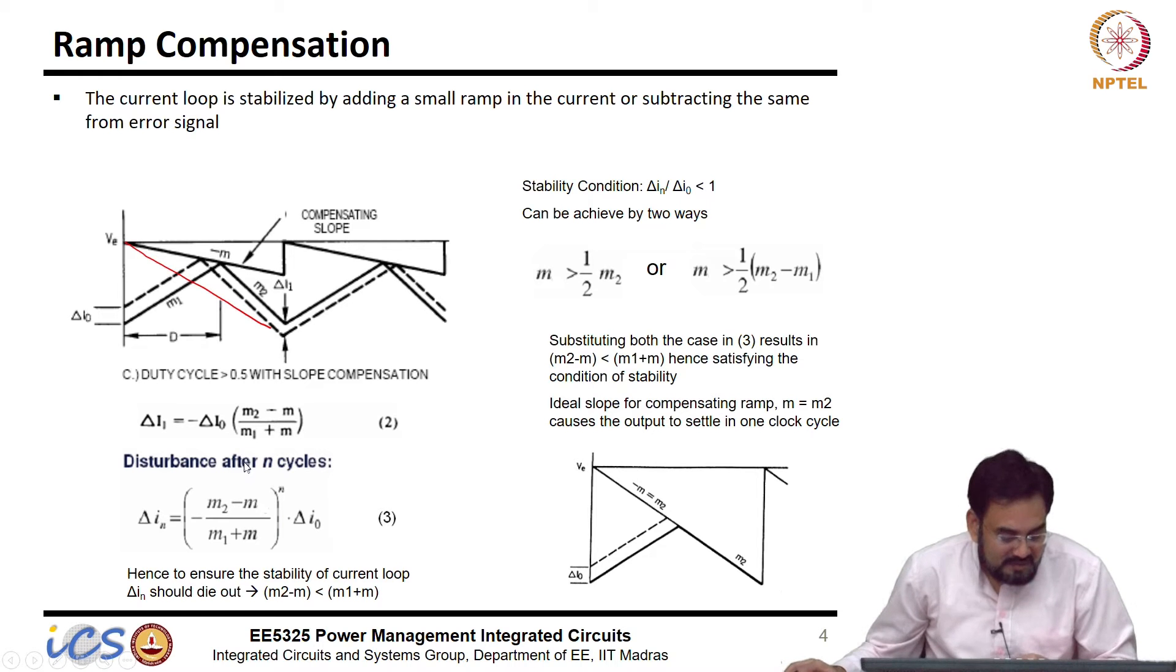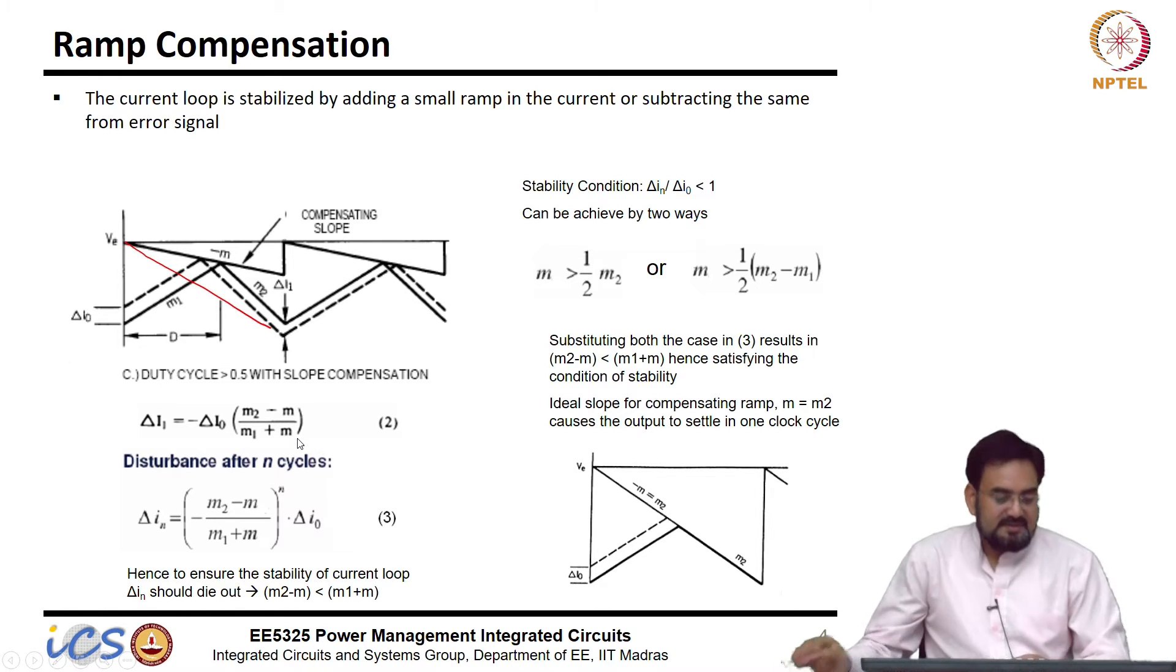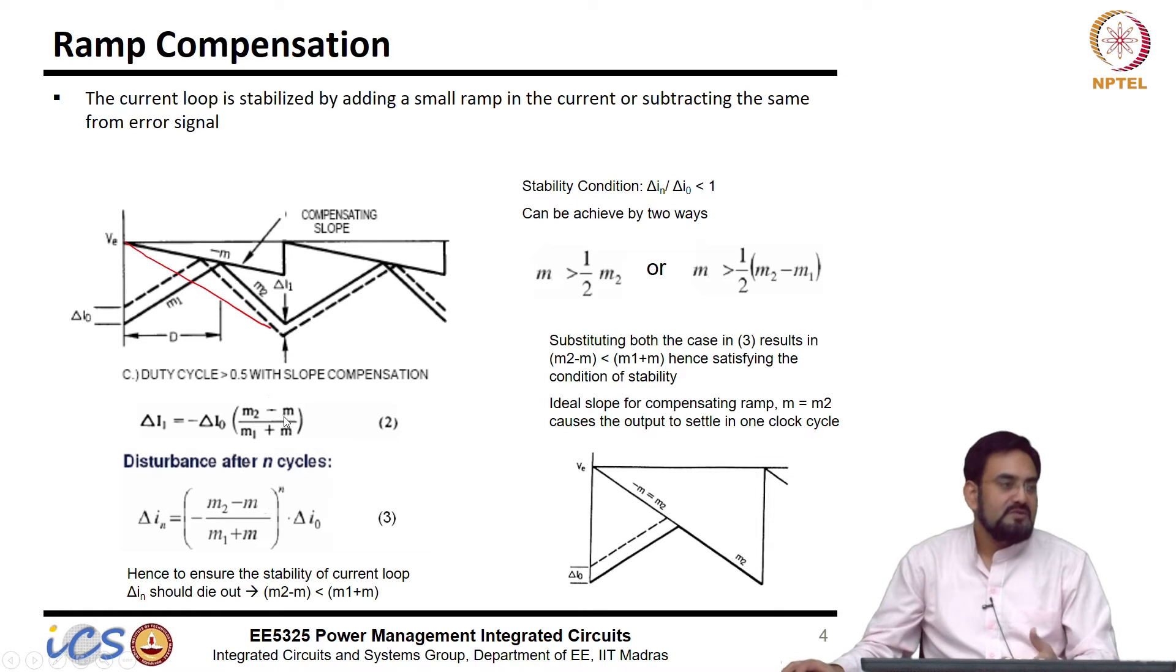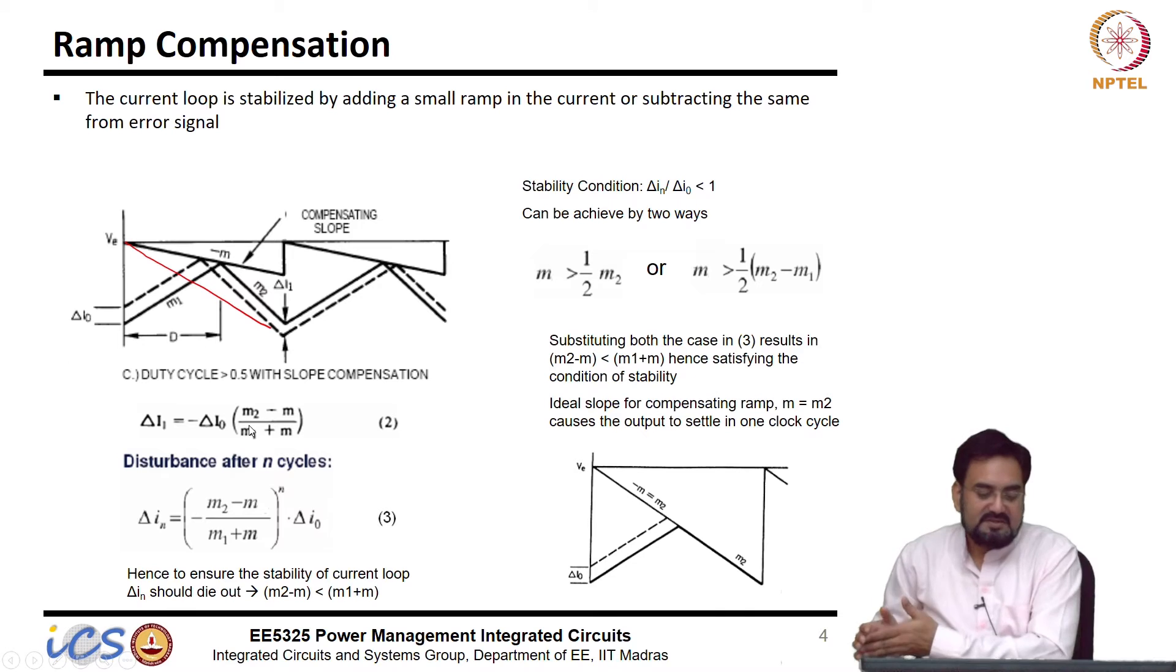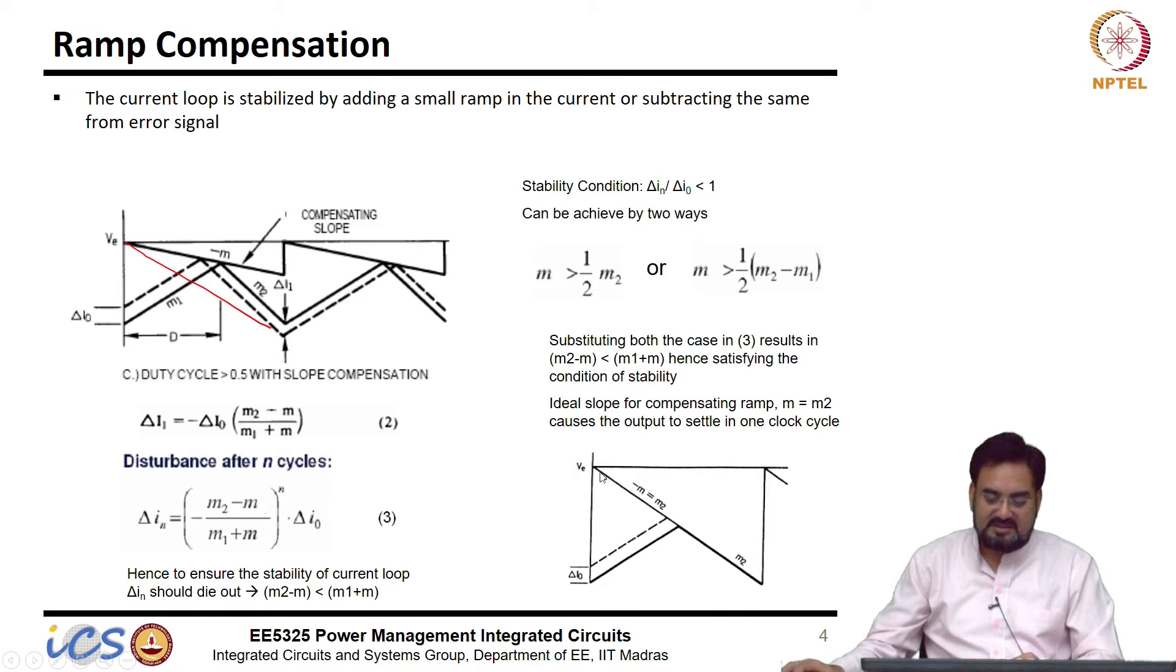So, what is the ideal case? Ideal case will be M2 equal to M, then it will be 0 and it will settle on just next cycle. This is the case, you disturb and your falling slope will exactly overlap with the steady state current and it will settle within the same cycle.